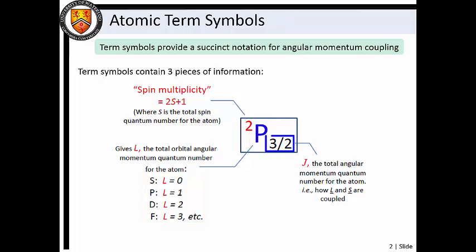The subscript gives the total angular momentum quantum number J. J tells us how the spin and orbital angular momenta are coupled.